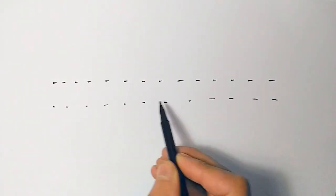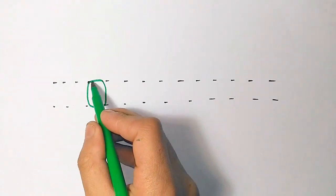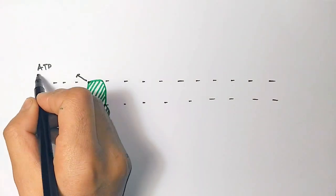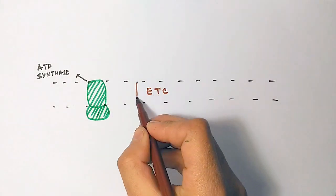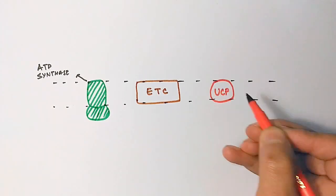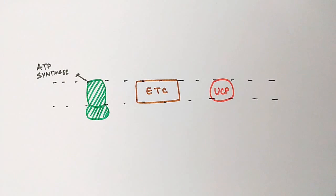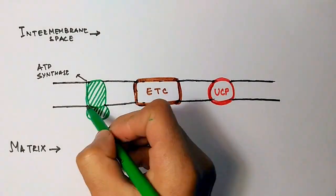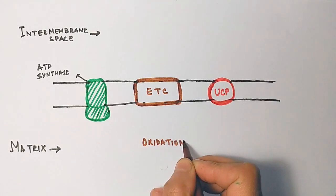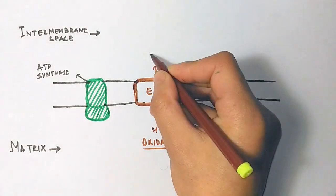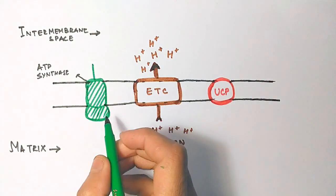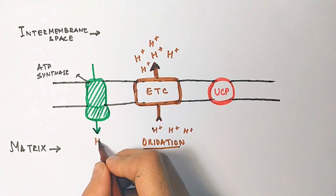Looking at the diagram, we can see the two pathways for protons to enter the matrix. In the mitochondrial membrane there is ATP synthase, the electron transport chain, and UCP. The upper side is the intermembrane space and beneath is the matrix. First, oxidation occurs, protons are produced and transported to the intermembrane space. From there, these protons have two pathways: either through ATP synthase, or through thermogenin, which is the UCP.